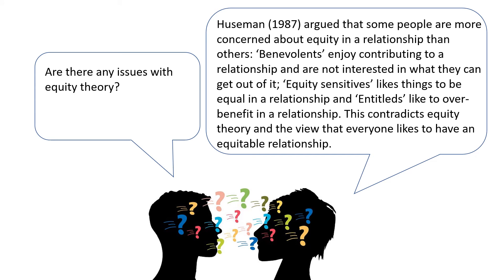Are there any issues with equity theory? Hussman argued that some people are more concerned about equity in a relationship than others. Benevolents enjoy contributing to a relationship and are not interested in what they can get out of it. Equity sensitives like things to be equal in a relationship, and entitleds like to over-benefit. This contradicts equity theory and the view that everyone likes to have an equitable relationship.